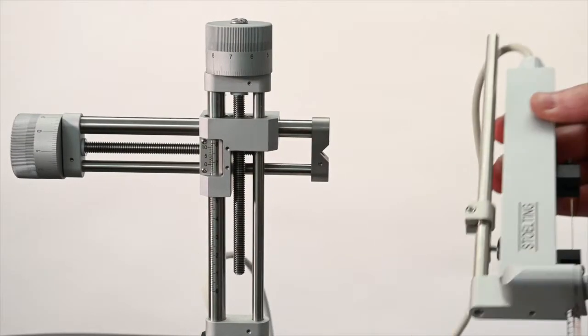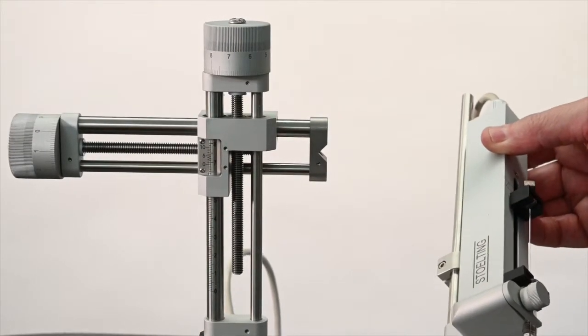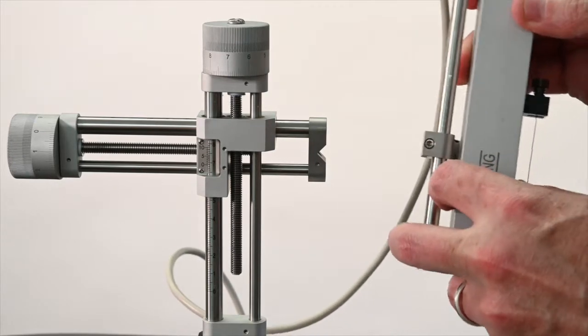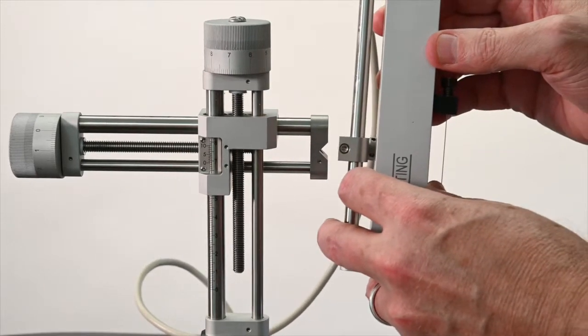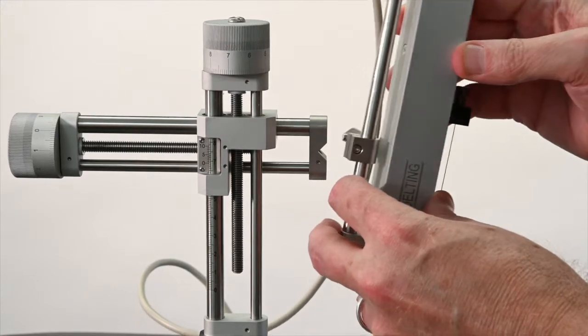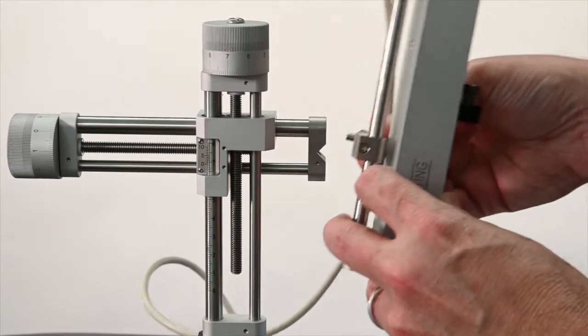All right, once you've loaded the syringe into this injector head, it's quite simple to attach it to the stereotaxic manipulator arm. Simply take the thumb screw that's right here, that is included with the injector head that's already attached.